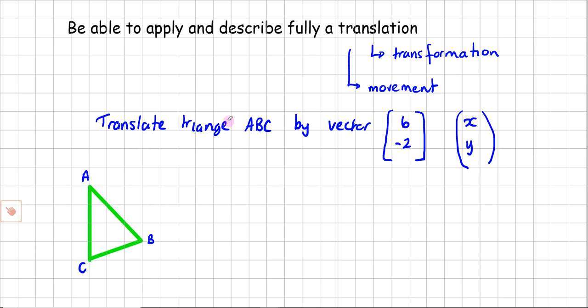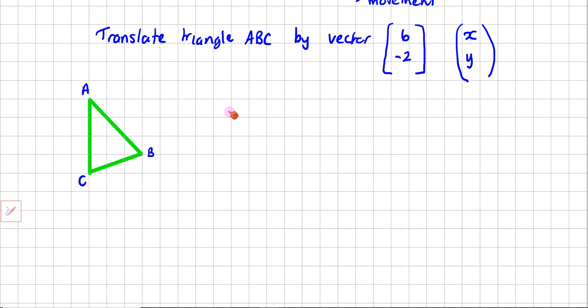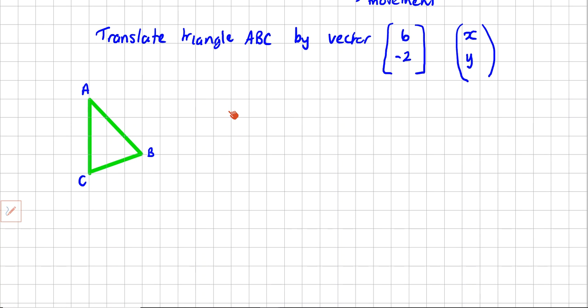How then would I apply my translation of this triangle? I should put an L in there. I'm surprised Jacques didn't tell me I'd spell that wrong. Normally, he picks me up on good things. Translate triangle ABC by vector six negative two. How do we do it then?